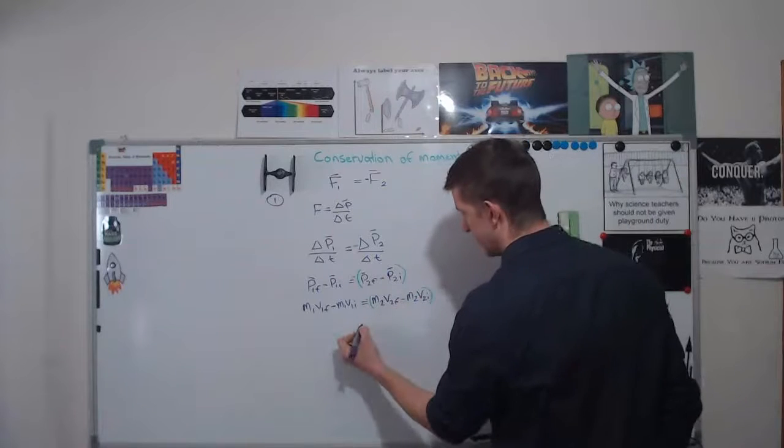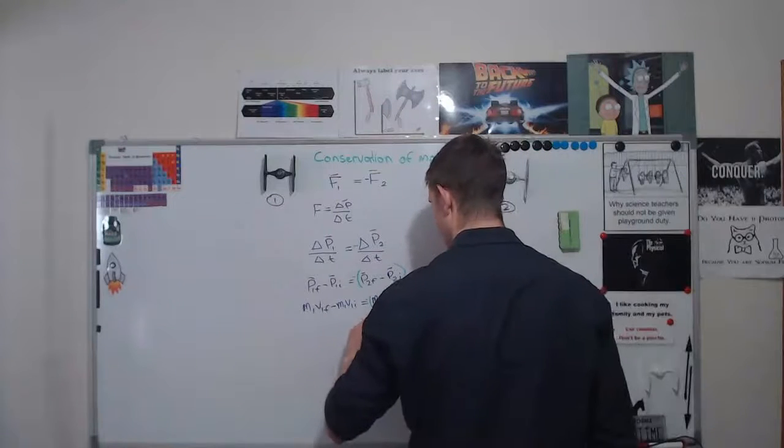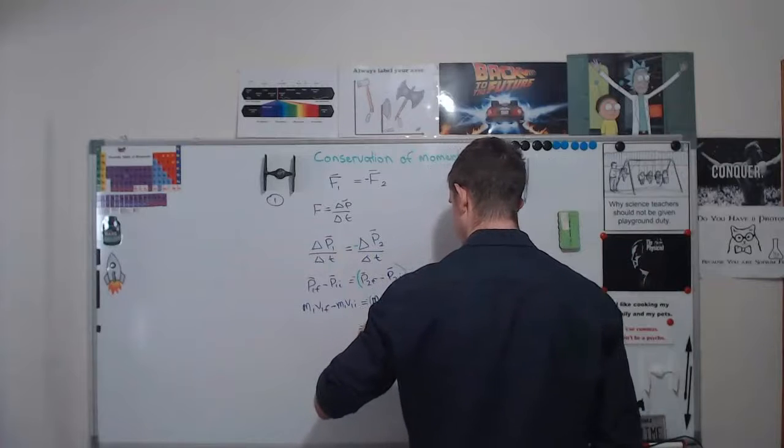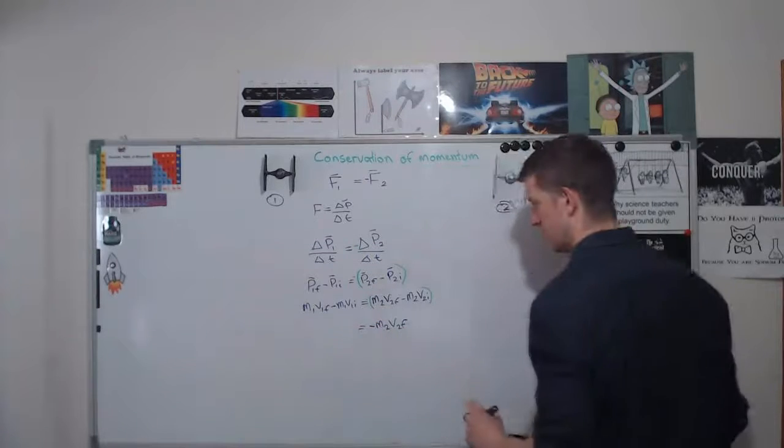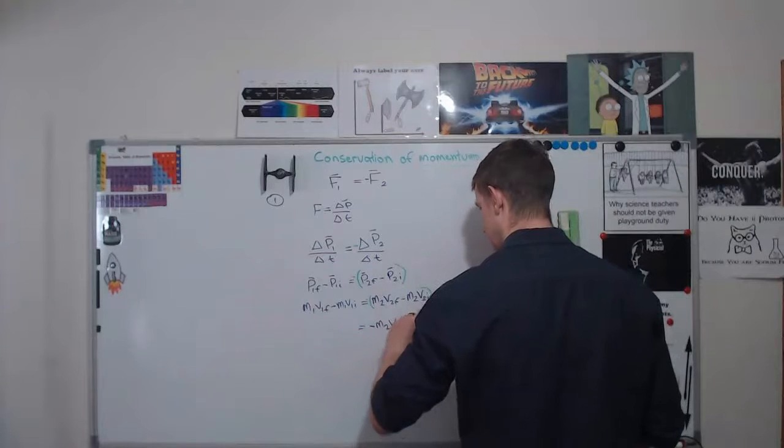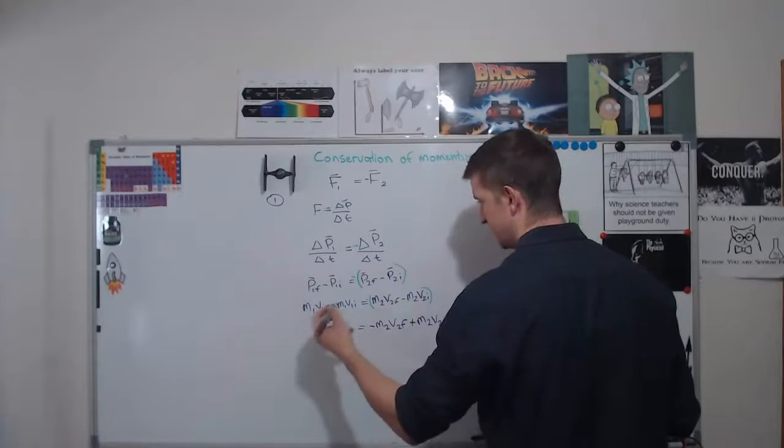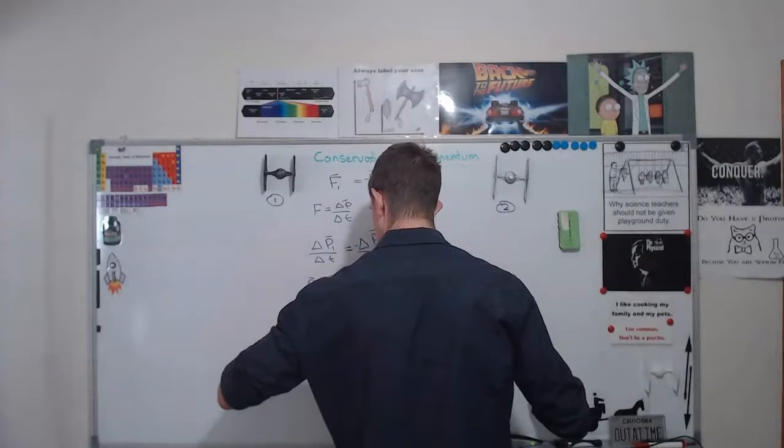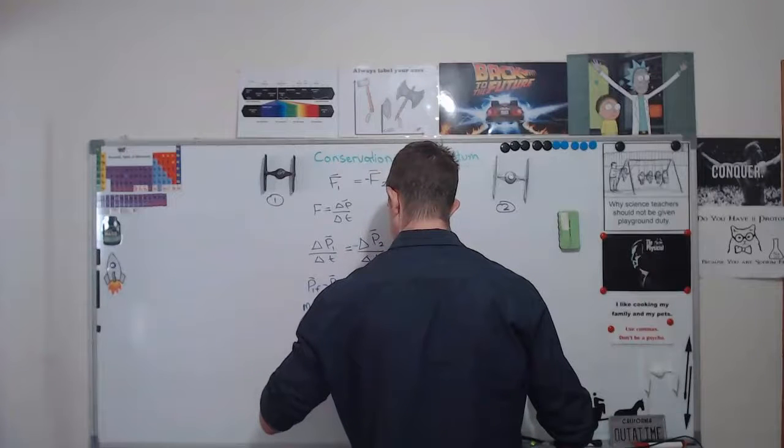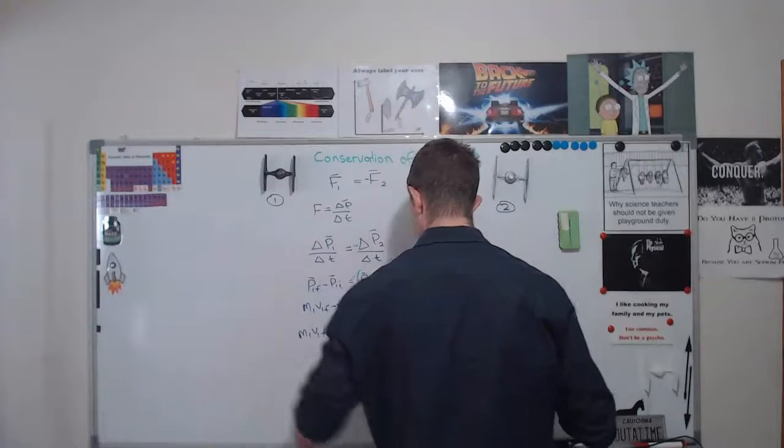So if I expand out the negative, the right hand side becomes minus M2 V2 final plus M2 V2 initial. And the left hand side remains, it is M1 V1 final minus M1 V1 initial.